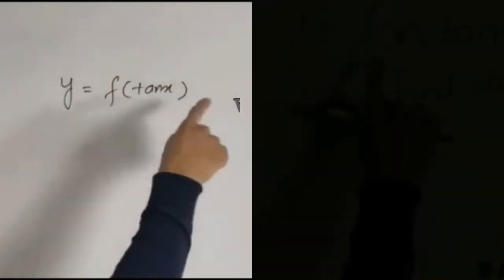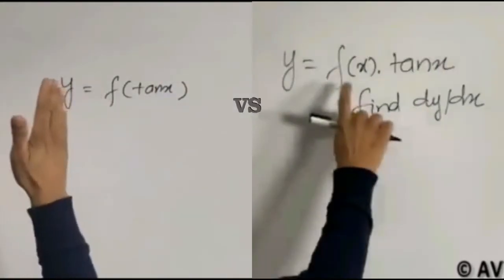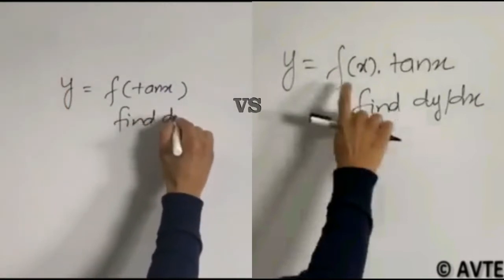If y equals f of tan x, that is the function which is given to us is of tan x, and they are saying find dy by dx.